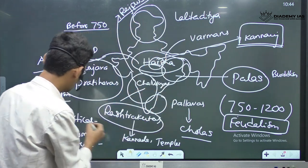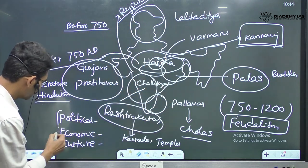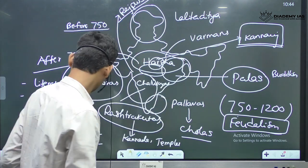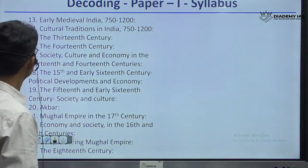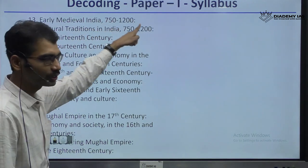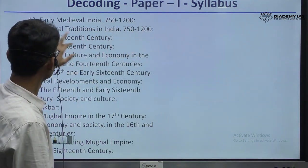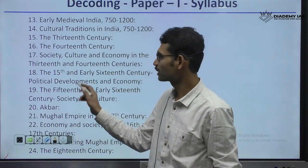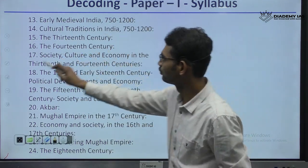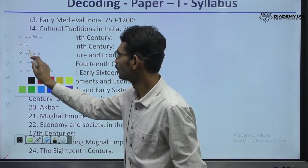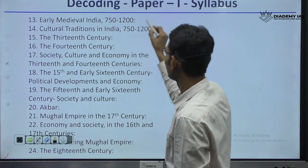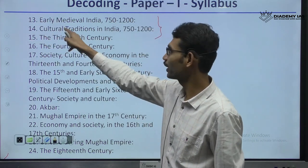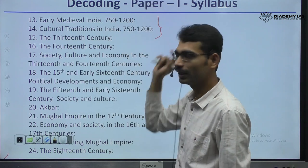All these things UPSC is testing. Let us go to the syllabus. Early Medieval India, 750 to 1200. Cultural Traditions in India, 750 to 1200. Between 750 to 1200, we have to see the political, economic angle, and cultural traditions in India.